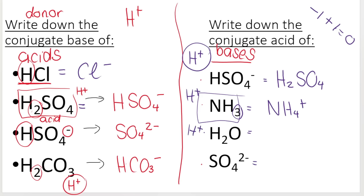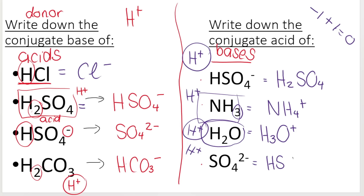H2O — if that accepts a proton, it's going to become H3O plus, because it had no charge and it's gaining a proton, so it has a charge of plus one. Then SO4 two minus: if I give that a proton — because it's a base it accepts a proton — it'll become HSO4 minus. It had a charge of two minus, and gaining a proton, a plus one, means its charge is now minus one. So it's still going to have a minus. I hope that makes sense.